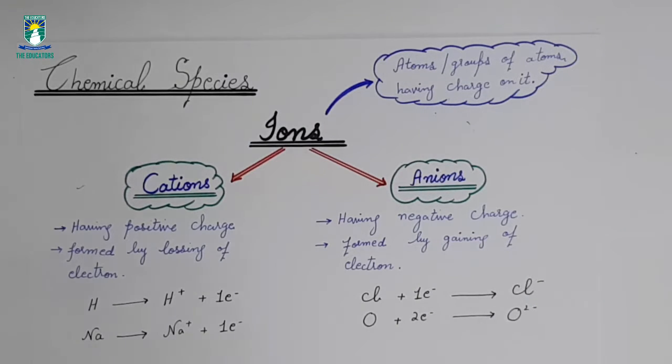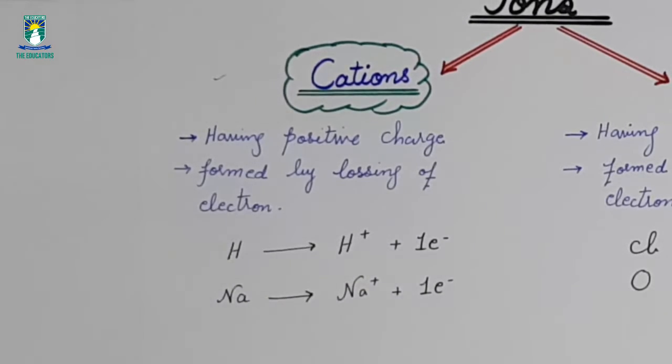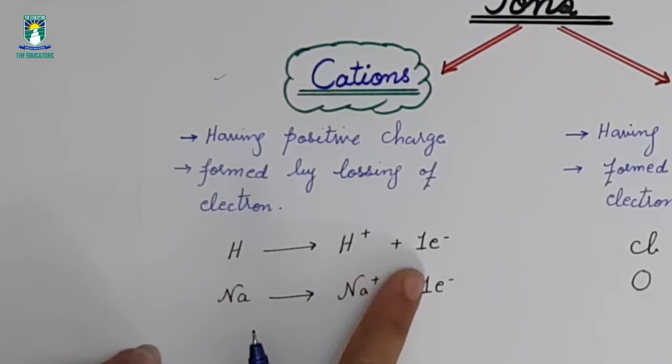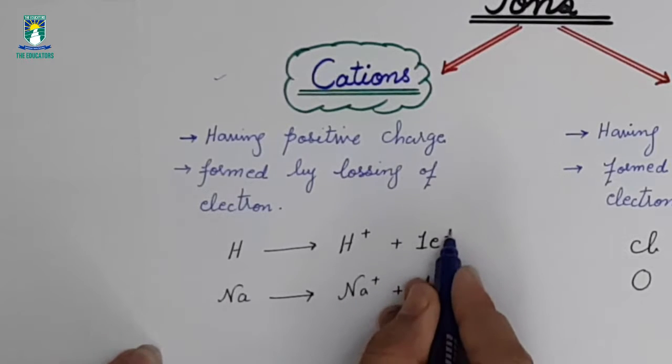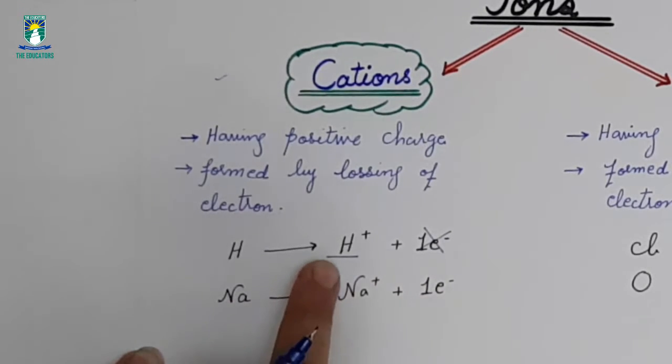How are cations formed? An atom acquires positive charge by losing its electron. We have examples hydrogen and sodium. When hydrogen atom loses its electron, it becomes a cation. This is a cation of hydrogen.